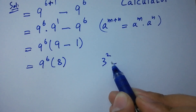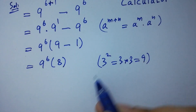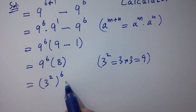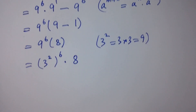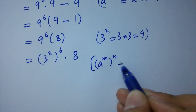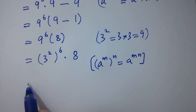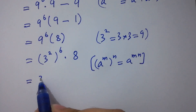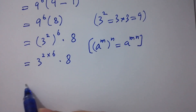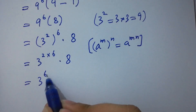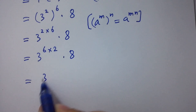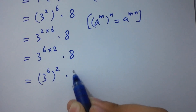As 3 squared equals 3 times 3 equals 9, we have here (3 squared) to the power 6 times 8. Using the rule a to the power m to the whole power n equals a to the power mn, it will be 3 to the power 2 times 6 times 8, which is the same as 3 to the power 12 times 8, and can be written as (3 to the power 6) squared times 8.